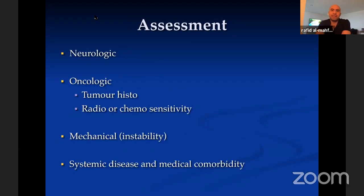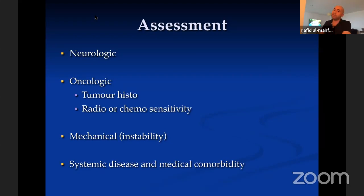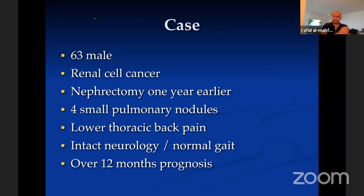When we assess our patients, it's with those factors in mind. Neurological assessment: any weakness, brisk reflexes, signs of cord or nerve compromise. Oncologic assessment: tumor histology — the patient may already have a known malignancy, or we find that from a CT staging scan. Once we have a provisional or confirmed diagnosis, we'll know whether it's radio- or chemo-sensitive. Then mechanical stability, and lastly the overall condition of the patient, including comorbidities and systemic disease.